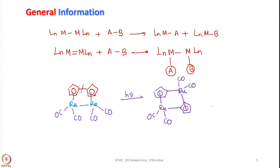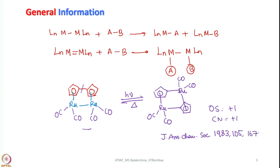Now if you see here, oxidation state increases by plus 1 and coordination number increases by plus 1 for each metal center. Of course, if you heat it back it can revert back to the starting compound. In this case, a neutral molecule splits into two anionic ligands and both of them are added to two different metal atoms since it is a bimolecular process. Here also the same thing happens, but initially we had two bonds - one bond is broken and one bond is retained so that it still remains as a dinuclear species.